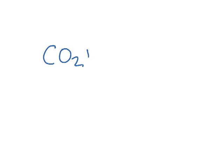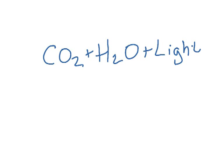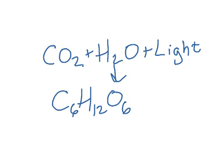Photosynthesis review. Let's review the basic chemical reaction for photosynthesis. Plants are taking carbon dioxide, CO2, and water, and in the presence of light, which provides the energy, are combining those two simple molecules into a larger organic molecule, which we normally simplify just as glucose, and in the process giving off oxygen gas, which is a byproduct — obviously very important for life on Earth.